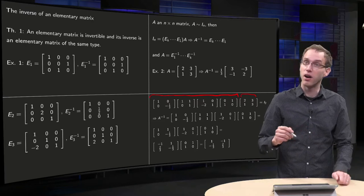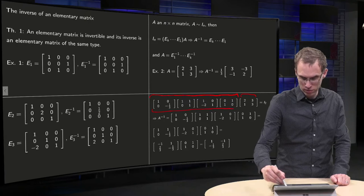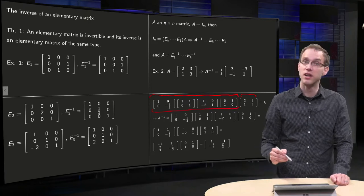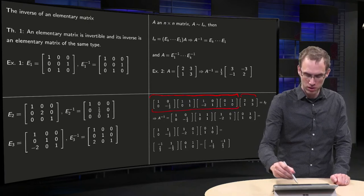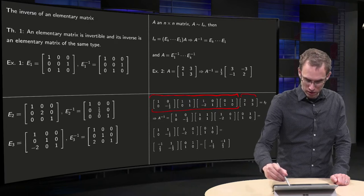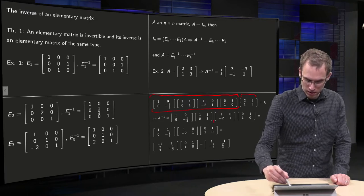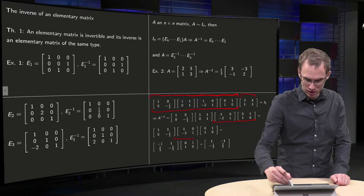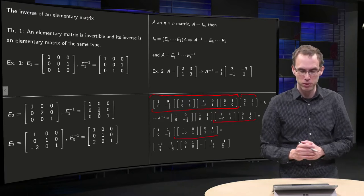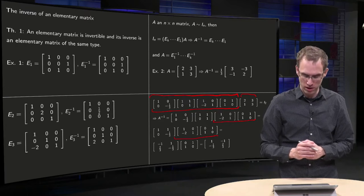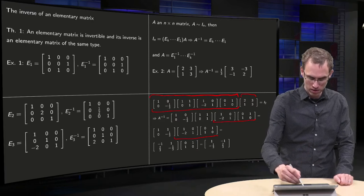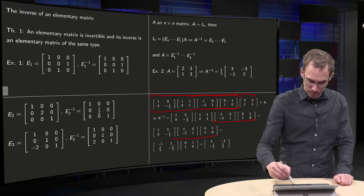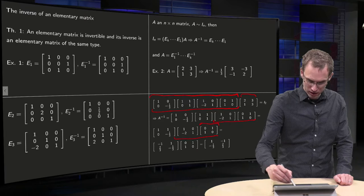So that means that our A inverse is the product of those 4 matrices. So let's compute that product. In the first step, we just copy these two matrices, and with the first multiplication we get 1, 0, and then a 1 and a minus 1 over 3.